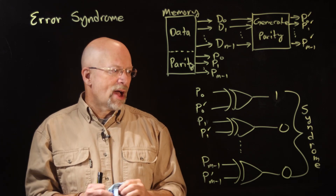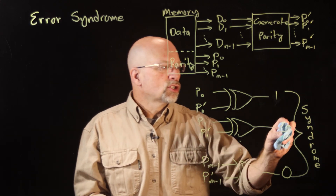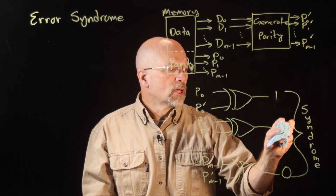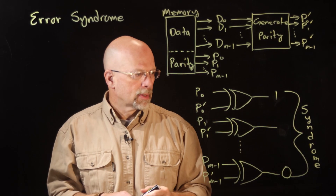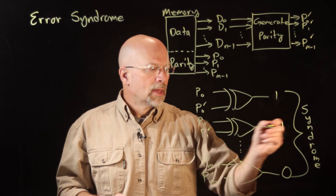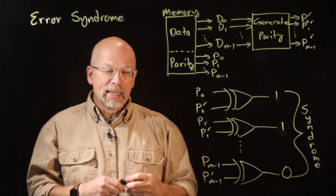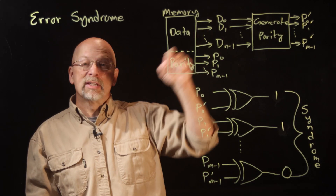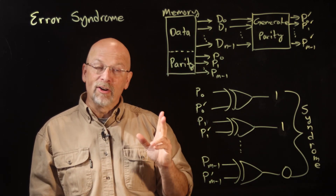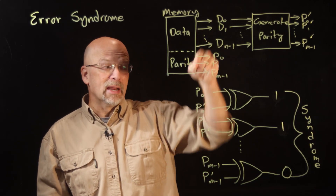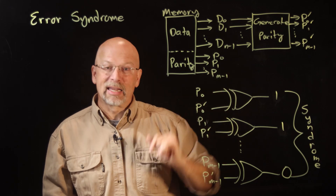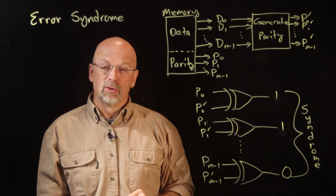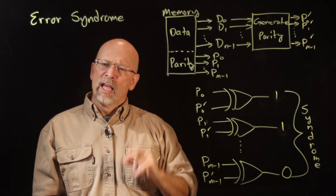If, however, two bits have flipped in the syndrome, that means one of the data bits has flipped, and we need to figure out which data bit is a member of exactly those two groups.